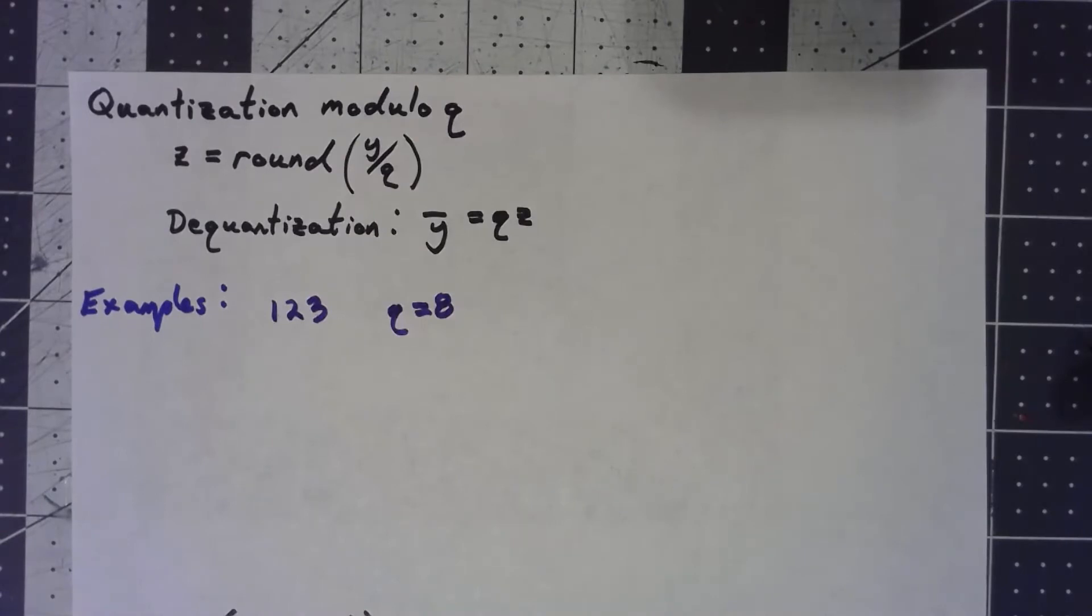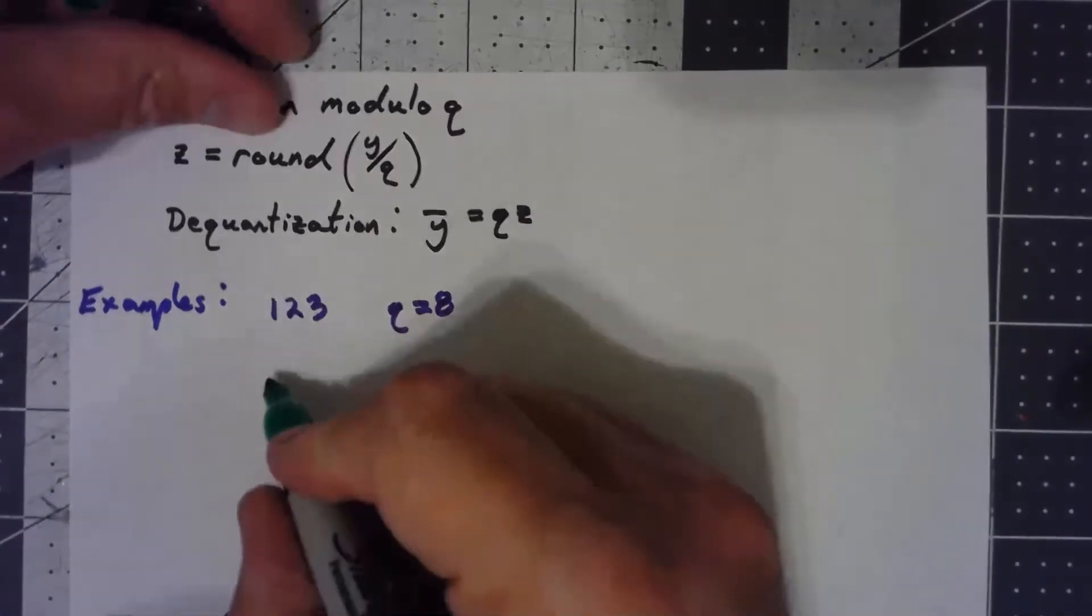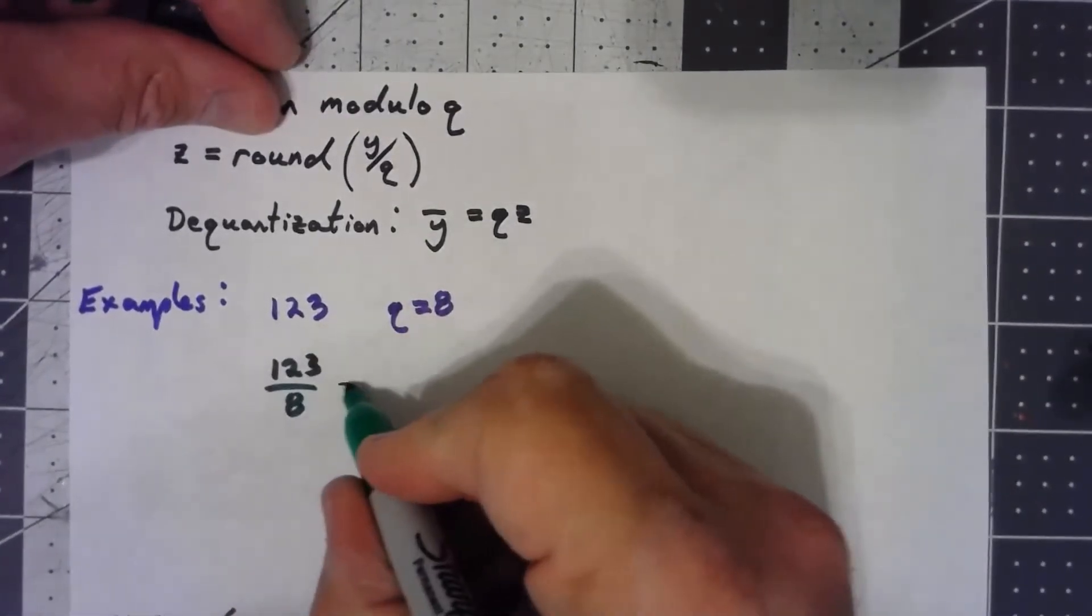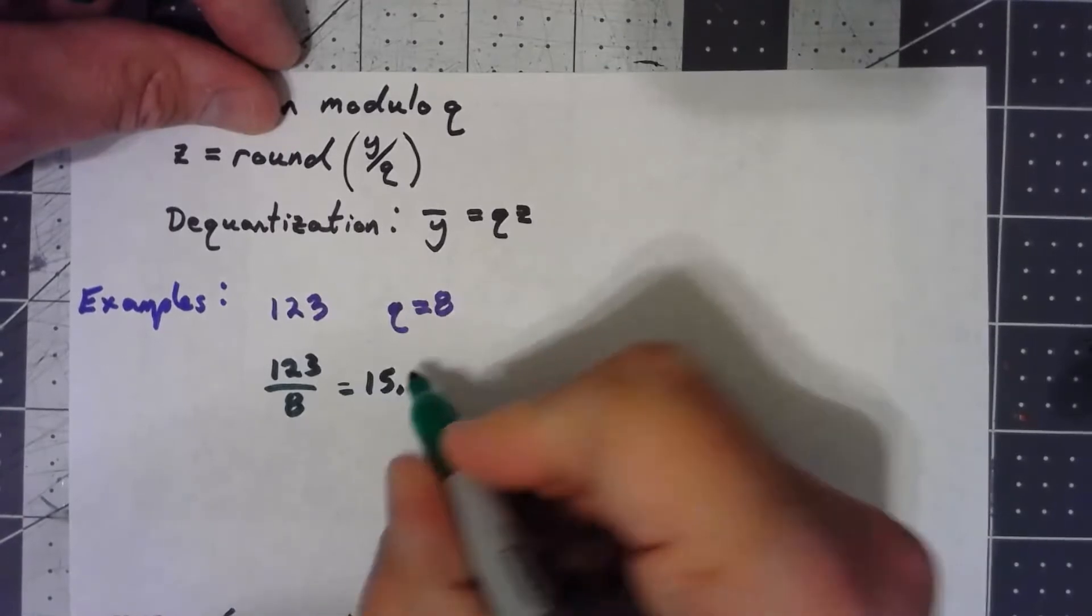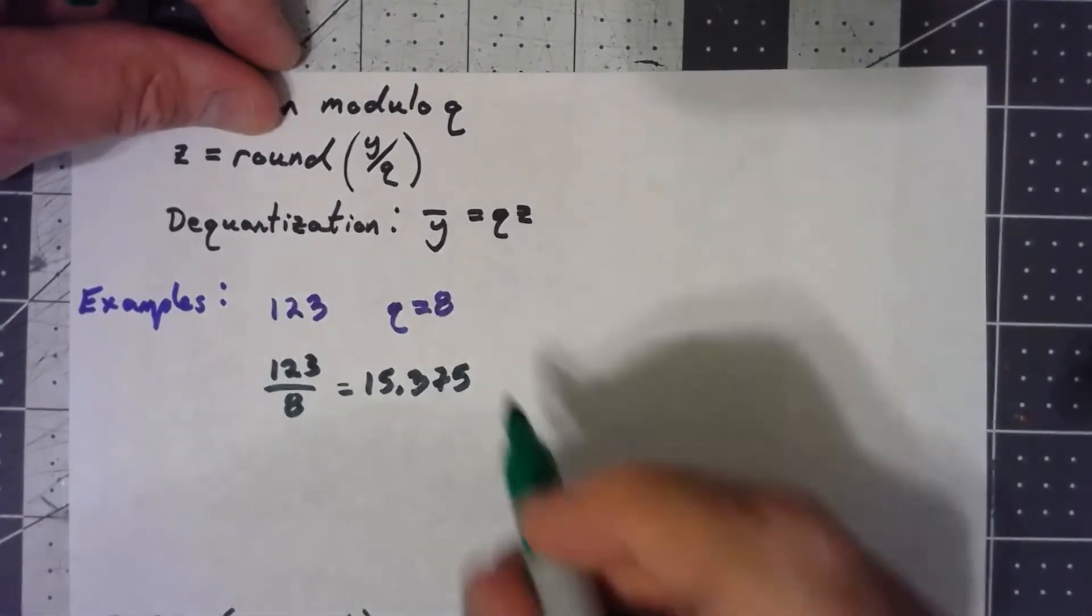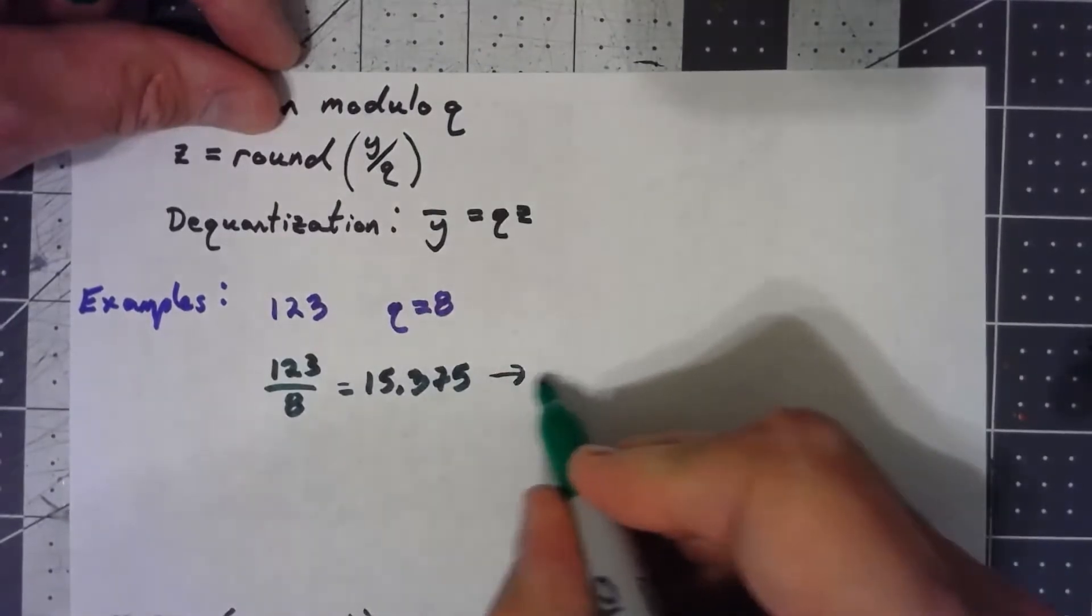Well, when I take 123 divided by 8, that gives me 15.375, which then rounds off to 15.